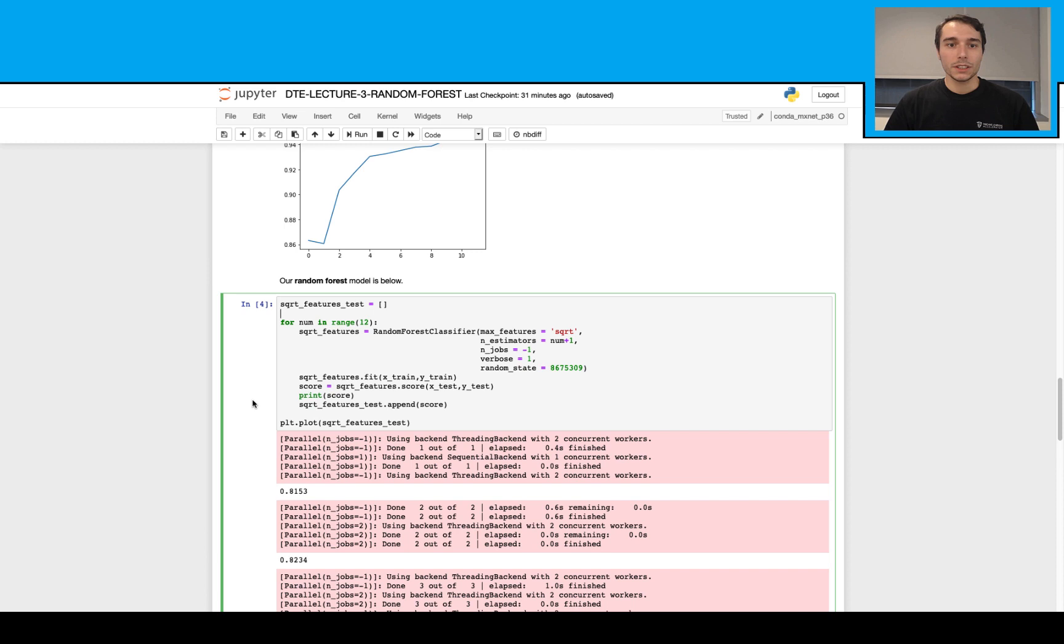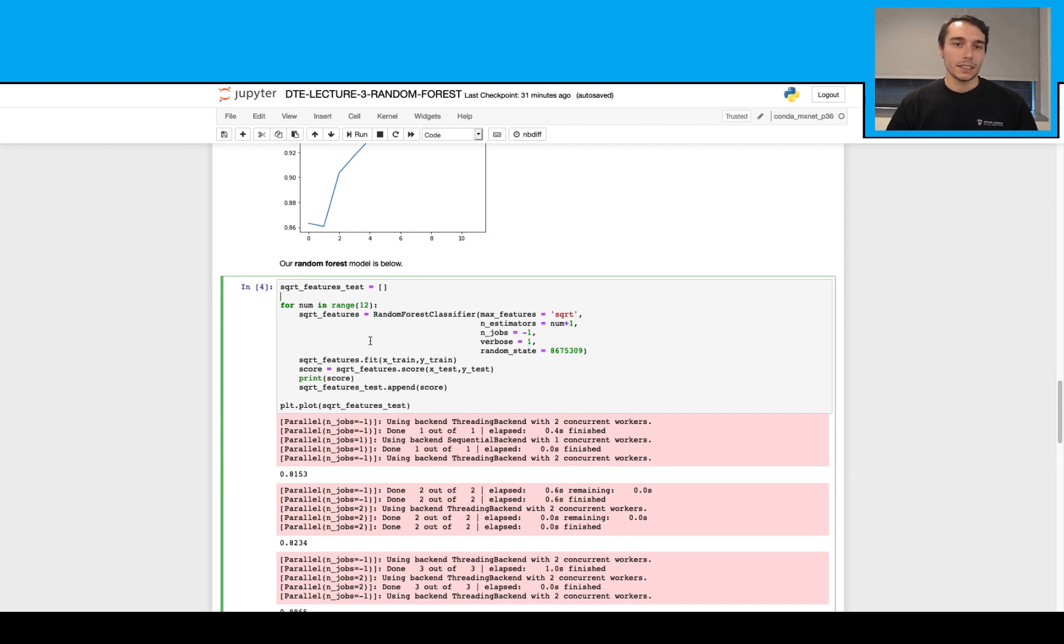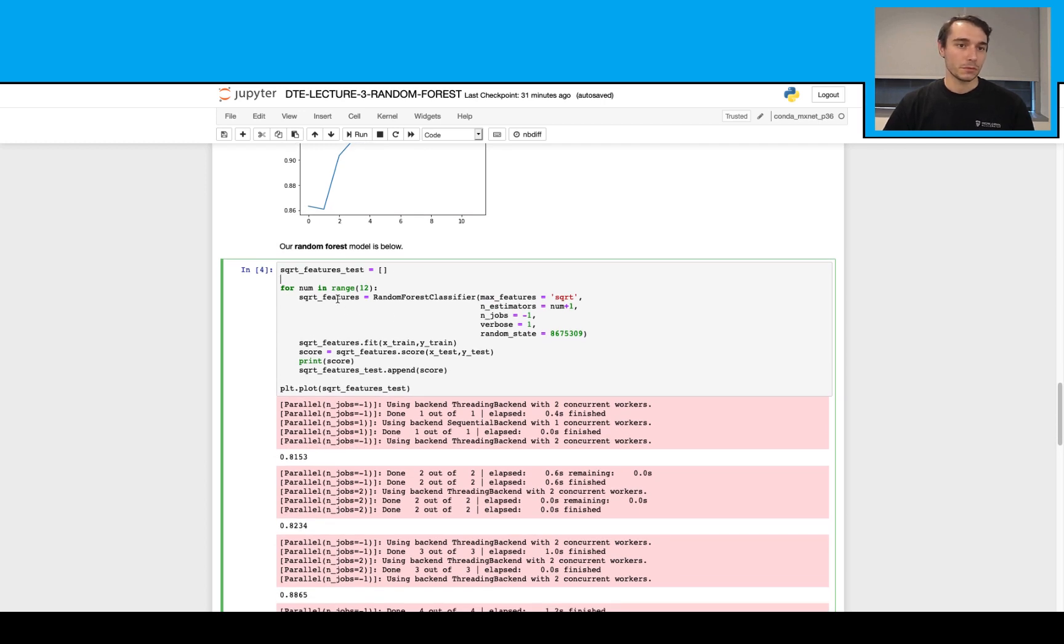We will get to our random forest model here. With this again, I'm just going to go from all the way from 1 tree to 12 trees. With this, I'm just going to change the max features parameters to square root.